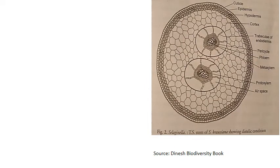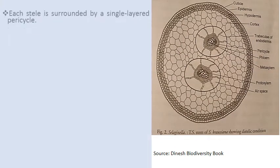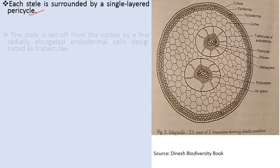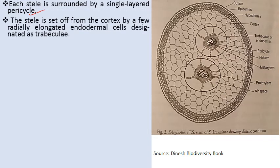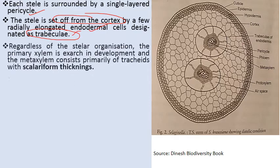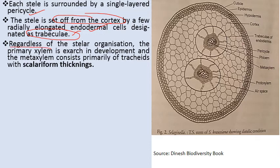Each stele is surrounded by a single-layer pericycle and is set apart from the cortex by radially elongated endodermal cells designated as trabeculae. The primary xylem is exarch — meta xylem is present at the center and proto xylem faces the periphery. Meta xylem consists primarily of tracheids with scalariform thickening; proto xylem thickenings are annular and spiral.